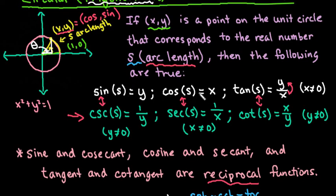Any number can be plugged in there for s. The tangent, cosecant, secant, and cotangent are undefined at some places. They are undefined for tangent and for secant whenever x is equal to 0. And for cotangent and cosecant, they are undefined when y is equal to 0. Because I cannot do 1 divided by 0.